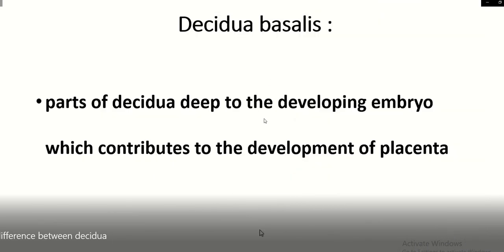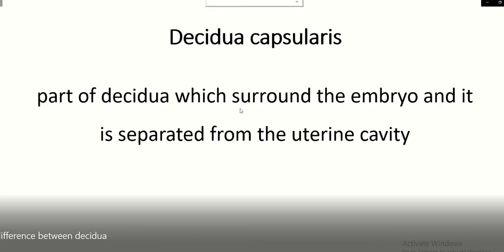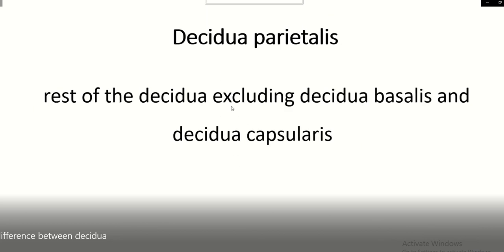Decidua basalis is the part of the decidua deep to the developing embryo, which contributes to the development of the placenta. Decidua capsularis is the part of the decidua which surrounds the embryo and separates it from the uterine cavity. Decidua parietalis is the rest of the decidua, excluding decidua basalis and decidua capsularis.